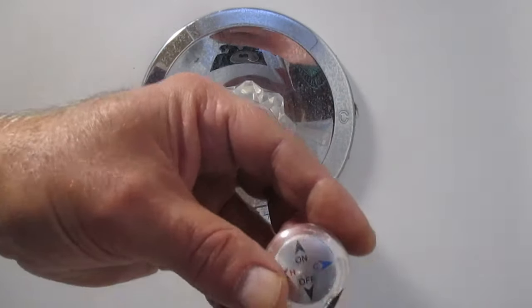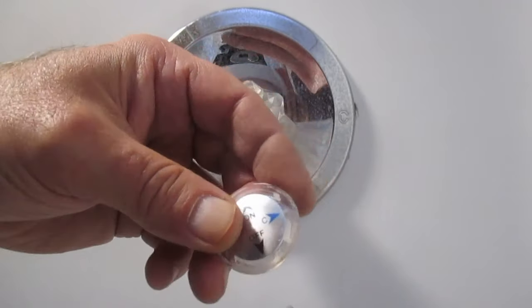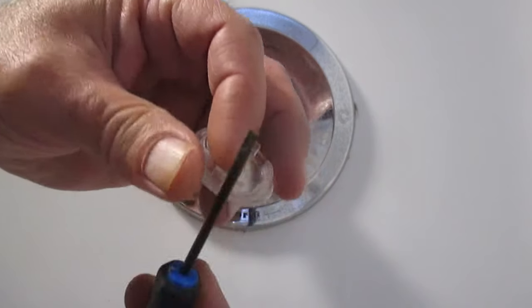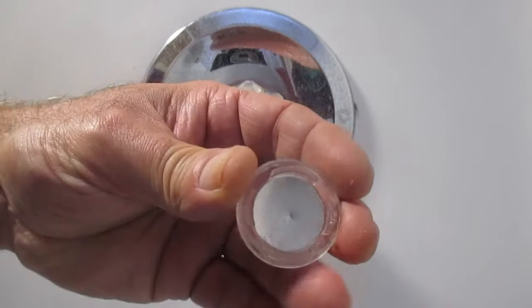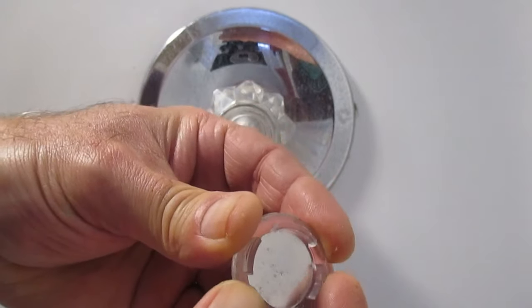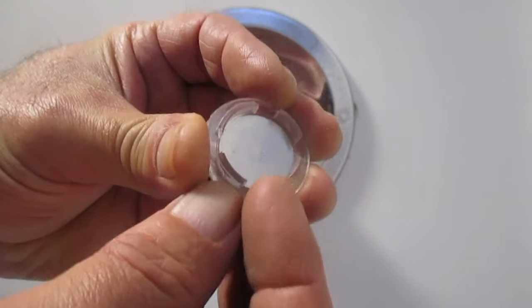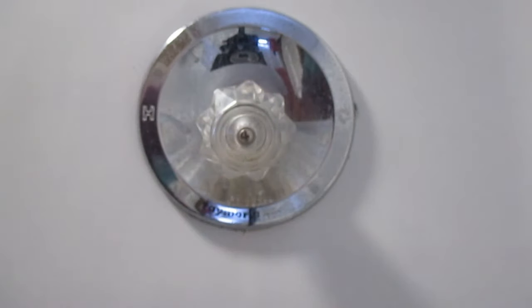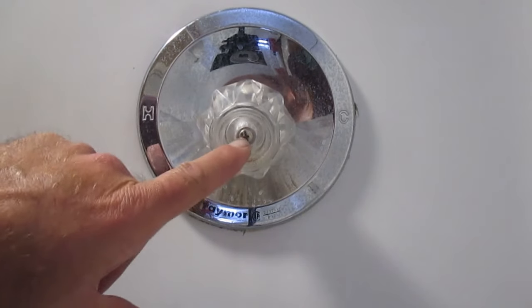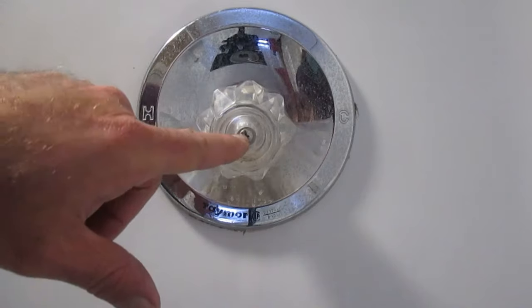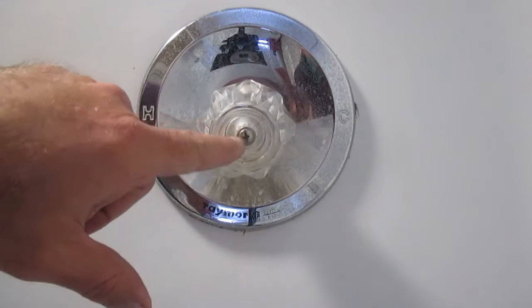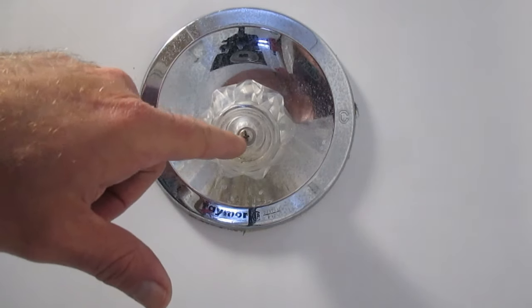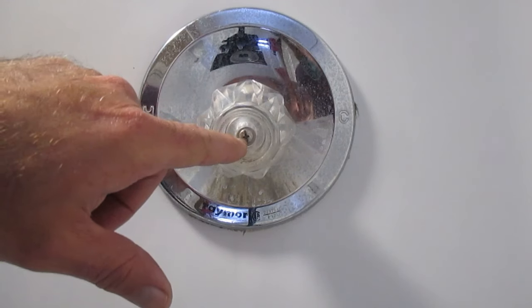So what I did there is I just kept going around the outside edge and eventually got enough space to get my small screwdriver in there. The rear of the cap we can see there's just little tabs and that's what holds it in place. Once it comes off we see there is a screw holding the handle in place. In this case it is a Phillips head screw.